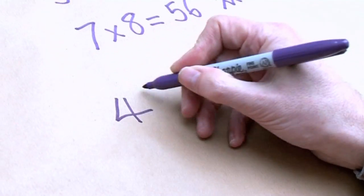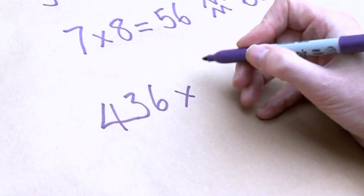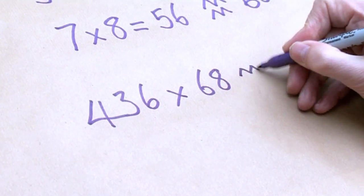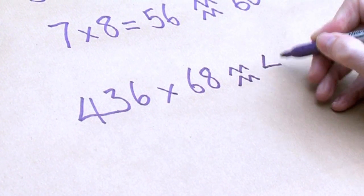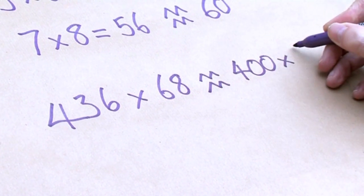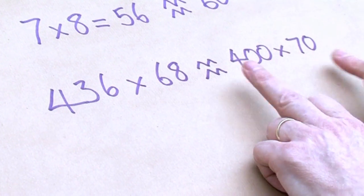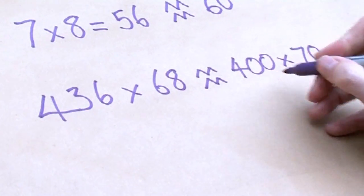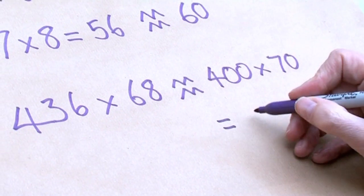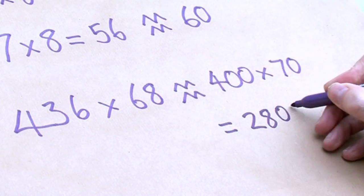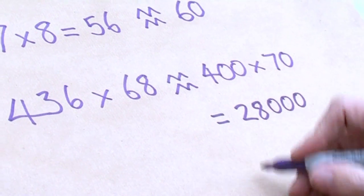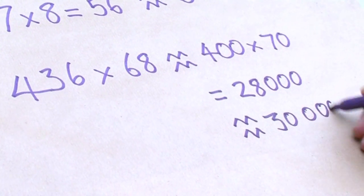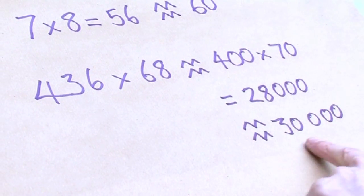Shall we do a big one? 436 times 68. Well, if we're z equalling this, the first thing we do is simplify these numbers. So that's z equals 400 times 70. We've simplified both those, and then it's just going to be 4 times 7 and then add on all the zeros at the end. Seven fours are 28, followed by three zeros, so that equals 28,000. But we're being really ruthless because we just want a rough answer, so it z equals 30,000. So 436 times 68 z equals 30,000.